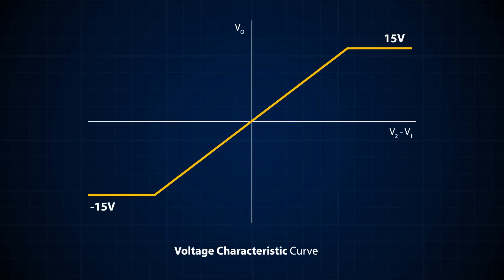Let's consider this voltage transfer curve. There are two saturation points, which signify the two biasing voltages. The inclined section of the curve has a slope equal to the gain of the amplifier. The vertical axis is the output, and the horizontal axis is the differential input, or V1 minus V2. Assuming the slope is 10^5, a 1 microvolt differential voltage will result in an output of about 1 volt, and a 10 microvolt signal traces to about 10 volts. Beyond a certain point, the output saturates. If the bias voltage is 15 volts, the maximum output voltage that can be obtained is 15 volts, regardless of the input voltage.